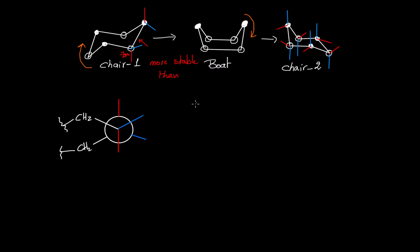In order to help you identify the different carbons, I will add substituents A, B, C, and D. Here you will have A, here B, then you have C on the axial of the back carbon, and then D here.